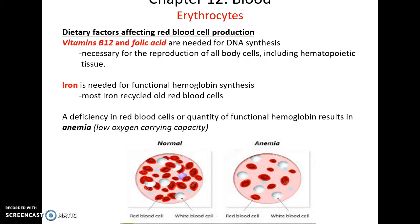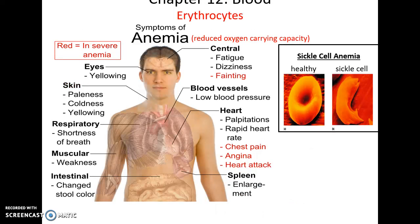The body tries to hold on to and recycle iron at all costs. If you have either too few red blood cells or not enough iron for the hemoglobin, then you get anemia — low oxygen-carrying capacity. Anemia symptoms can include yellowing of the eyes, paleness, coldness, shortness of breath, a change in stool color, heart palpitations, dizziness, and fainting. This depends on the exact cause: red blood cells rupturing too soon, not enough being produced, blood loss such as internal bleeding, or a genetic disorder.